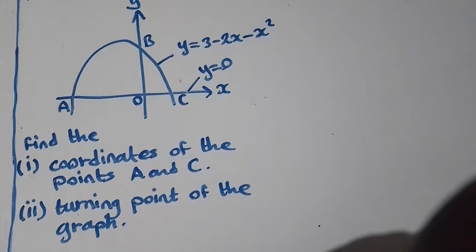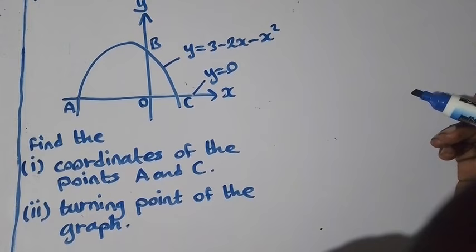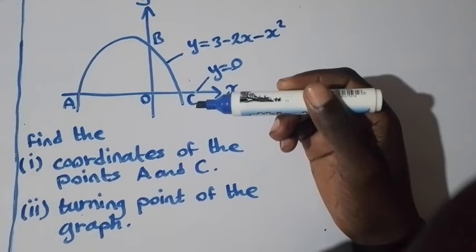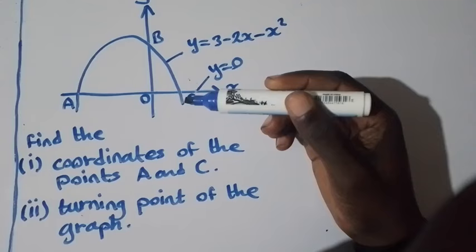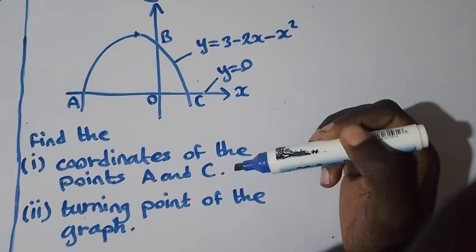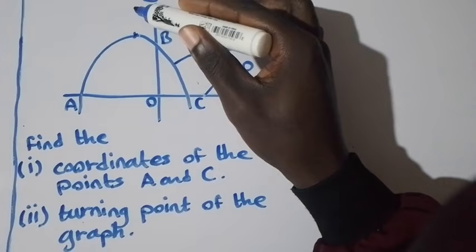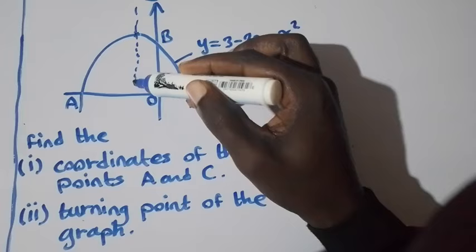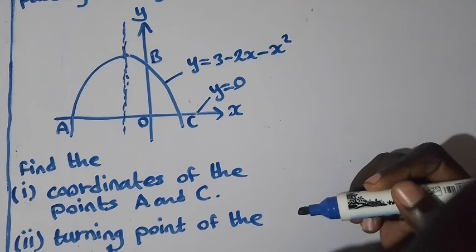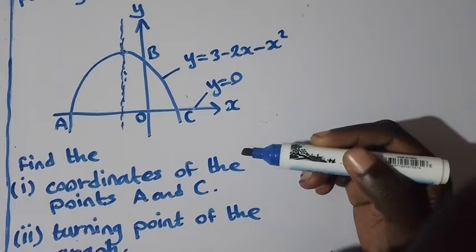Moving to question 2: find the turning point of the graph. The turning point is the point at which the curve is changing its orientation or direction. To find this coordinate, we first need to find the symmetrical equation — the equation that divides the curve into two equal parts.